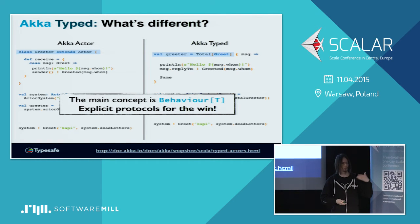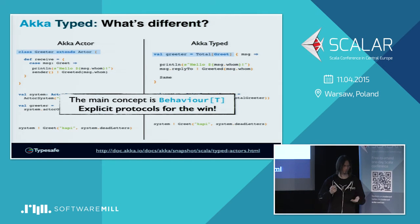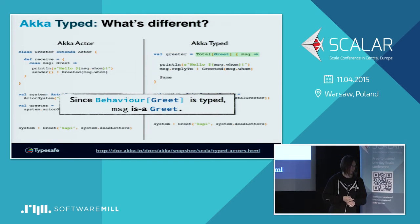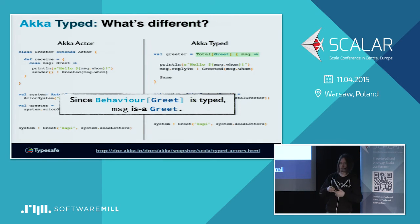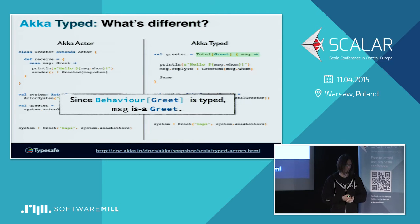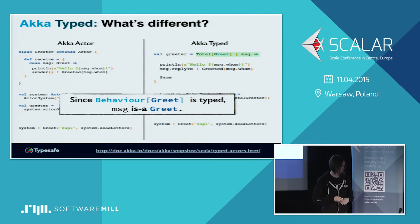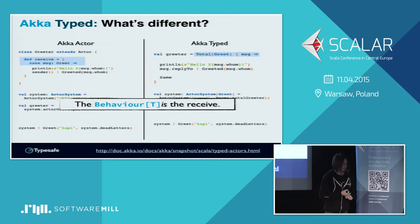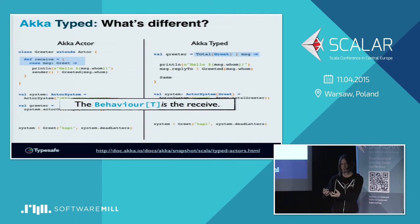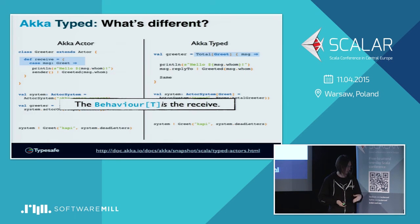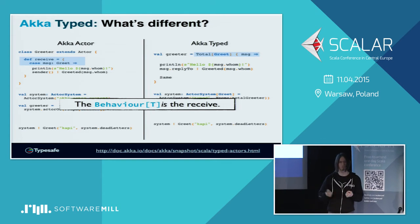Now we have behaviors, and they are typed. So you can be a behavior of, I don't know, a buying-a-car protocol, something like that. Then you just implement it, and because we know this is the greet protocol, the message will be a subclass of the greet. The behavior is actually the receive. So we kind of extracted the core of what is an actor — its behavior is the most important thing about an actor. Instead of having a receive block, the behavior is the receive block.